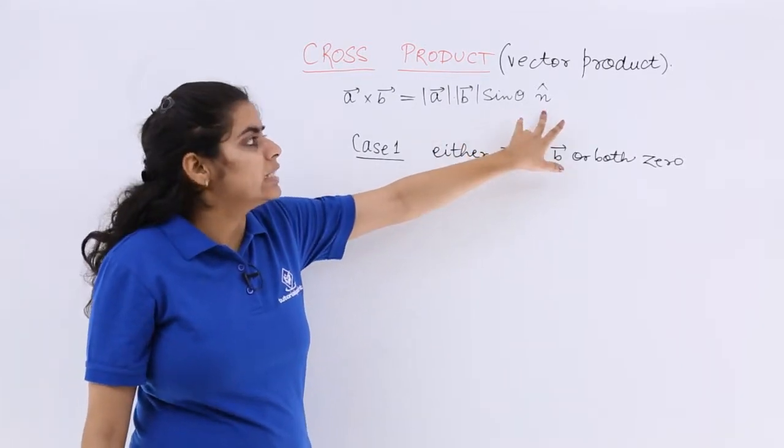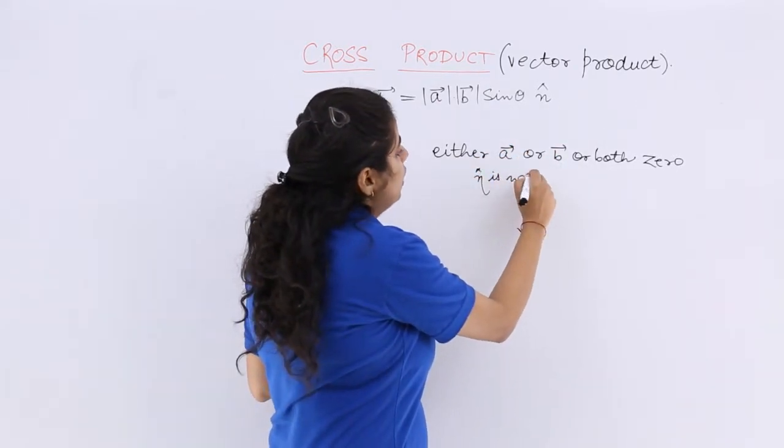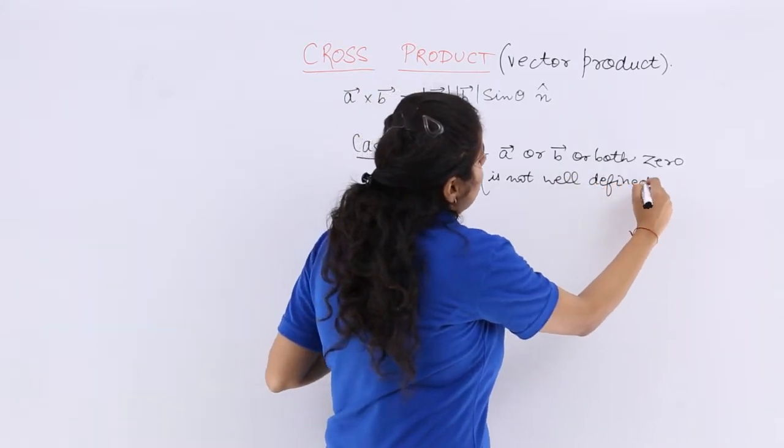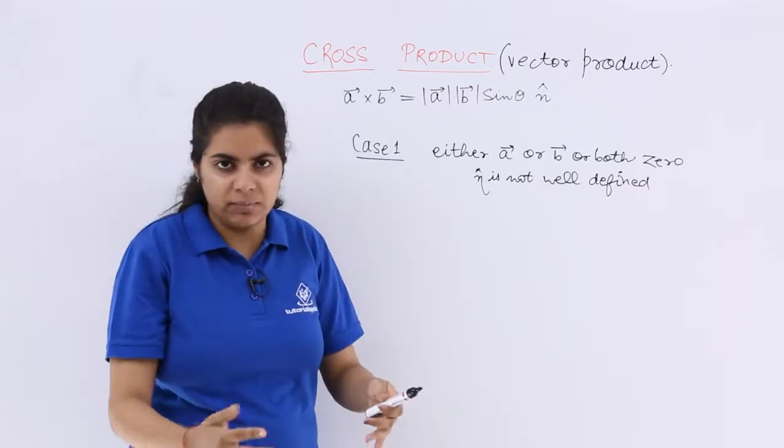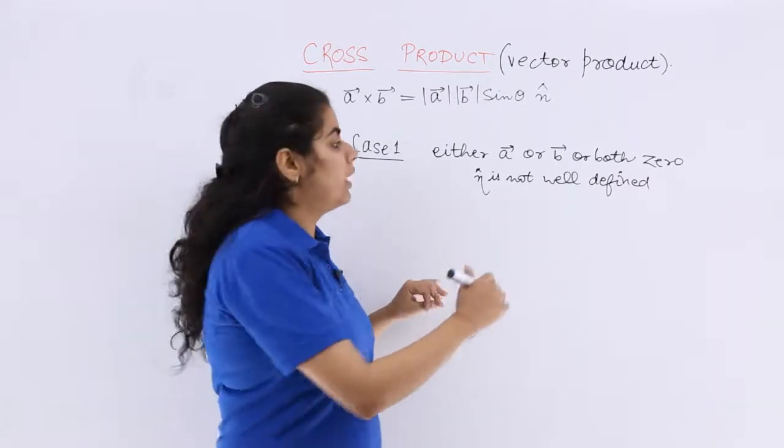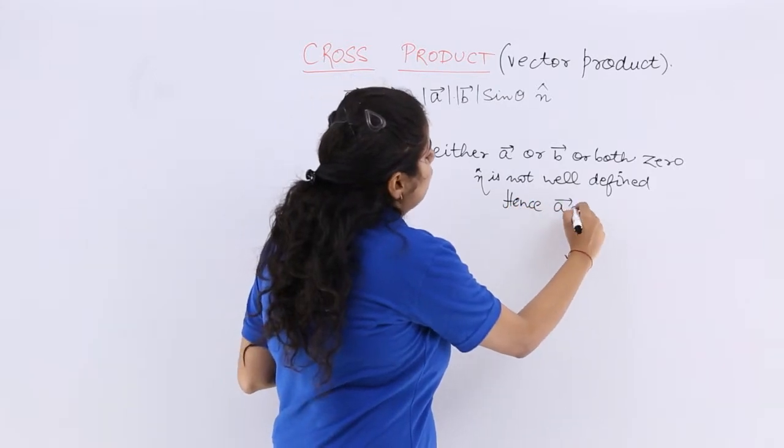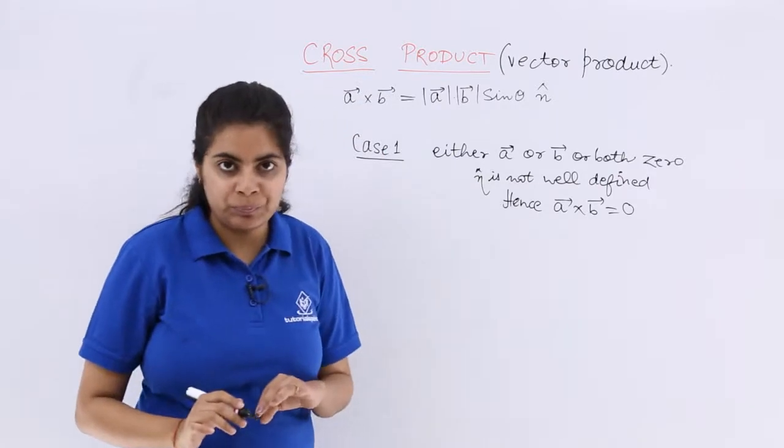Then definitely this n cap, the unit vector, is not well defined because we have no clear idea about the plane. So this is not well defined, hence the cross product is coming out to be 0.